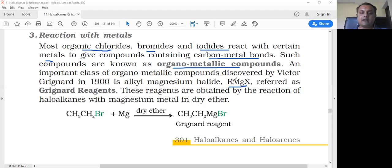An important class of organometallic compounds discovered by Victor Grignard in 1900 is alkyl magnesium halide, referred to as Grignard reagent. These reagents are obtained by the reaction of haloalkane with magnesium metal in dry ether.